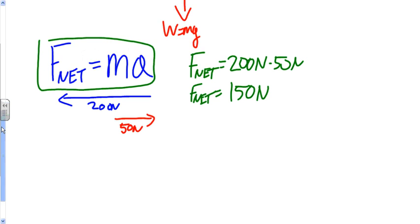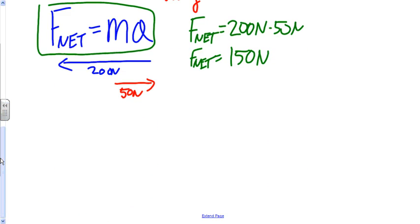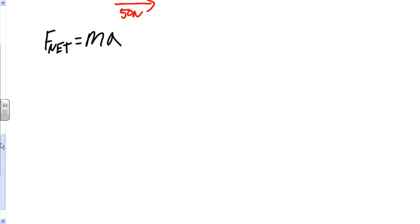The mass of the block was given as 100 kilograms. Therefore, what we have is F net equals ma. Our force is 150 newtons. And that equals 100 kilograms times a.